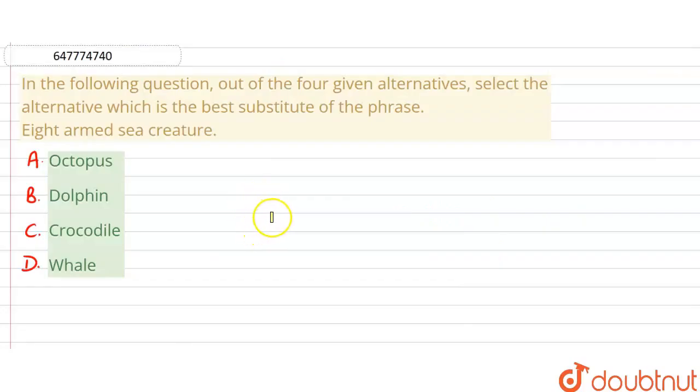Hello everyone, the question is: out of the four given alternatives, select the alternative which is the best substitute of the phrase. This phrase given is 'eight armed sea creatures'. This phrase means in four options, it will be equal to one of them. We will tell you which option can best express this phrase.